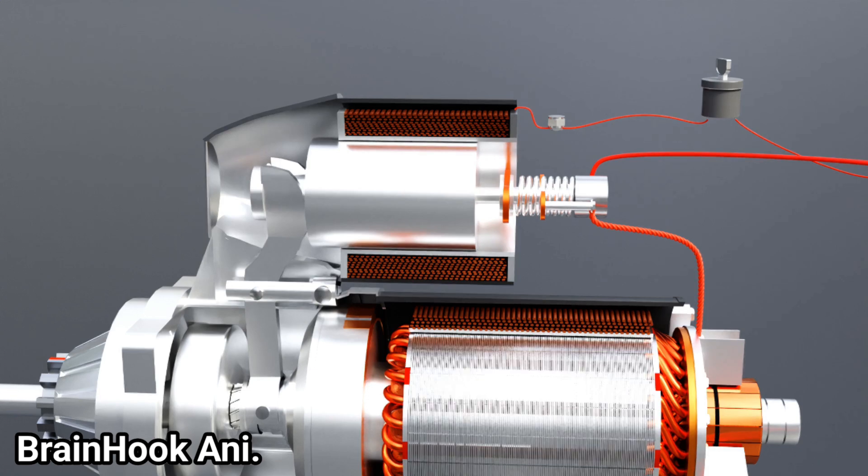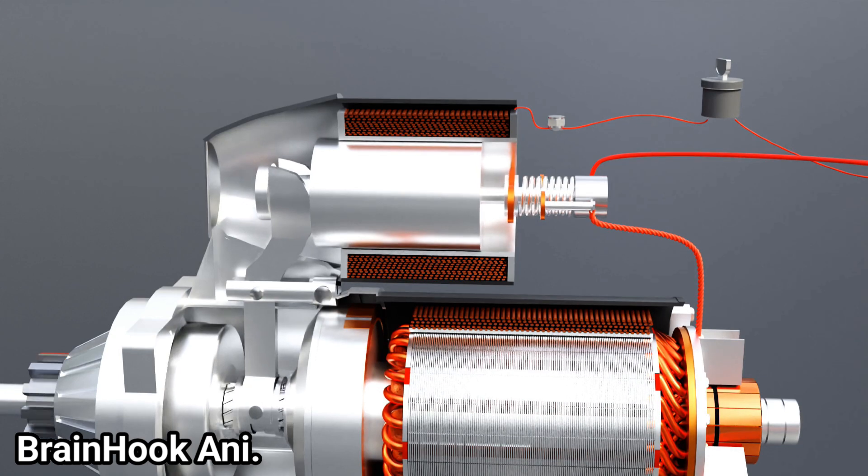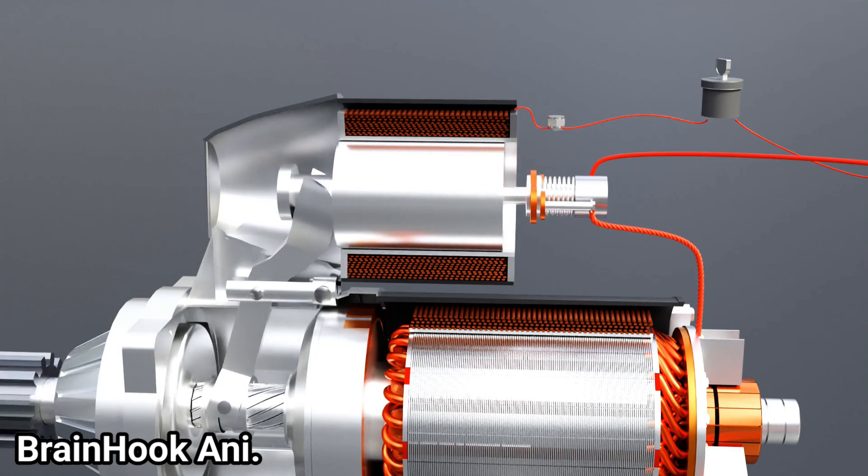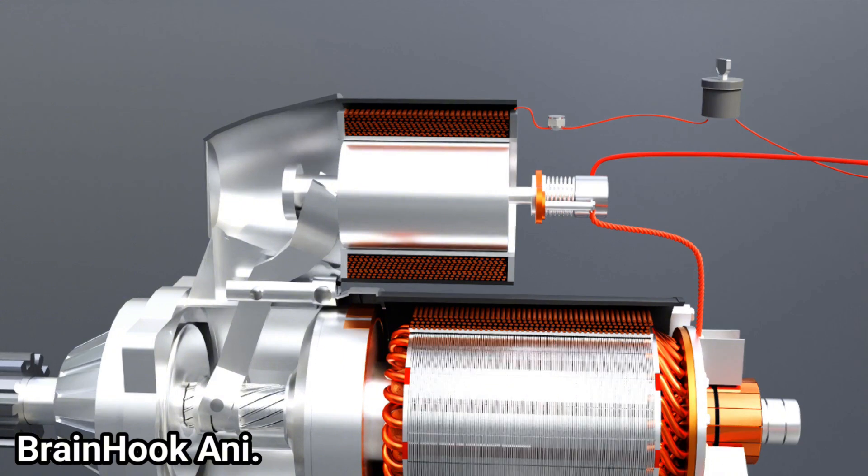Whenever current flows through the solenoid, the core within it moves back and forth with no vibration occurring, and the copper plates instantly connect. Because of such smooth connections, no sparks are created and this huge amount of electricity can flow silently. That means we can control a large amount of electricity by flowing a small amount of electricity through solenoid.